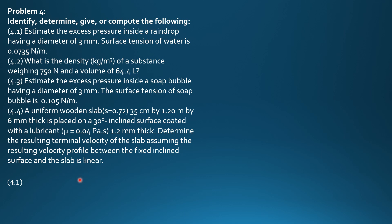So, excess pressure — you should watch first my lecture video on properties of fluids and perfect gas law and equation of state of gases, so that you will be informed with this. Although in my other lecture videos I derived these formulas. So, excess pressure inside a raindrop is given by 4 times surface tension over diameter.